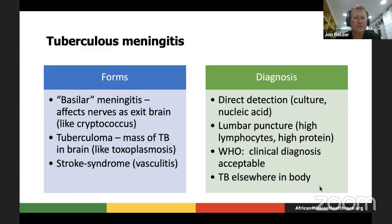Just a couple of words about pediatric TB: about one million global infections. Like people with HIV, kids have weak immune systems, so they tend not to cavitate and they tend to disseminate. You get a lot of spinal TB and a lot of TB meningitis. BCG vaccination does help to mitigate that problem, but its impact on pulmonary tuberculosis probably wanes as people get older.